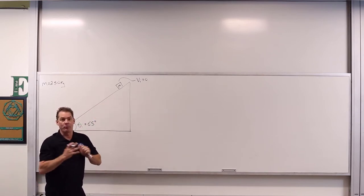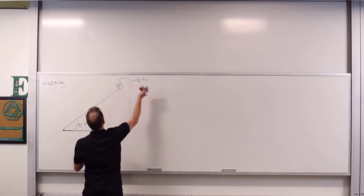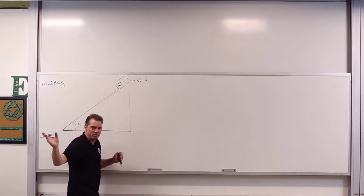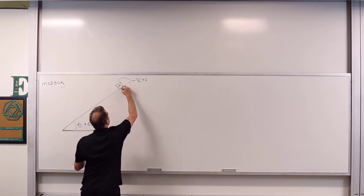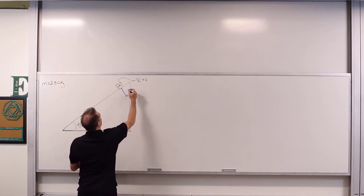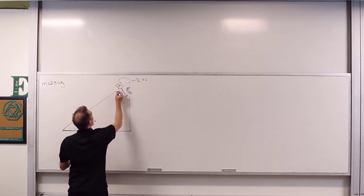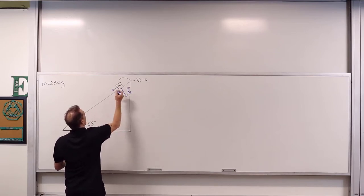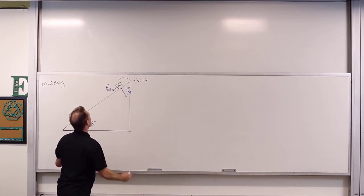A little force diagram — what are the forces acting on this object? It's a frictionless incline. We've got the perpendicular component of the gravitational force, Fg perpendicular, and the parallel component of the gravitational force, Fg parallel.